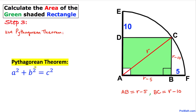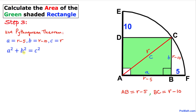Therefore we are going to use the Pythagorean theorem: A² + B² = C². In triangle ABC, the longest side AC is our side C, the horizontal side I'm going to call A, and the vertical side I'm going to call B. Filling in the blanks: (R − 5)² + (R − 10)² = R². I'm going to call this equation number one.